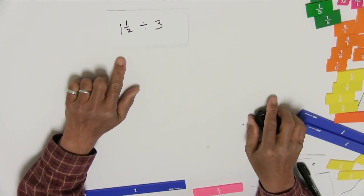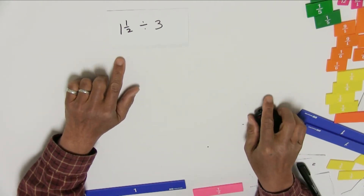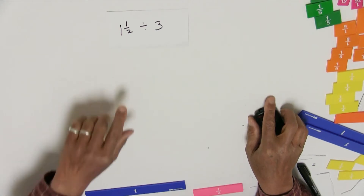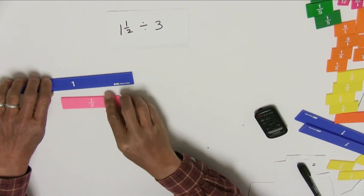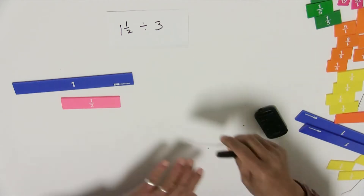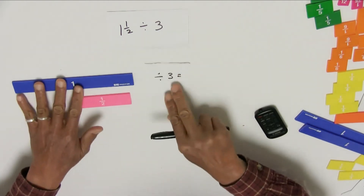Today, I'm going to do some more fraction division. In this particular case, I'm going to do fraction division using the partition method, where the question we ask is: how much does one person receive? So here's the setup: 1 and ½ divided by 3.